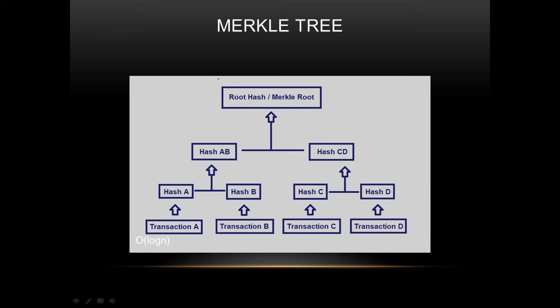A Merkle tree is a tree-type data structure with a root node containing the root hash, and leaf nodes at the bottom. For example, with four transactions — A, B, C, and D — each transaction's data is passed to a hash function and the resulting hash is stored in a corresponding leaf node of the tree.